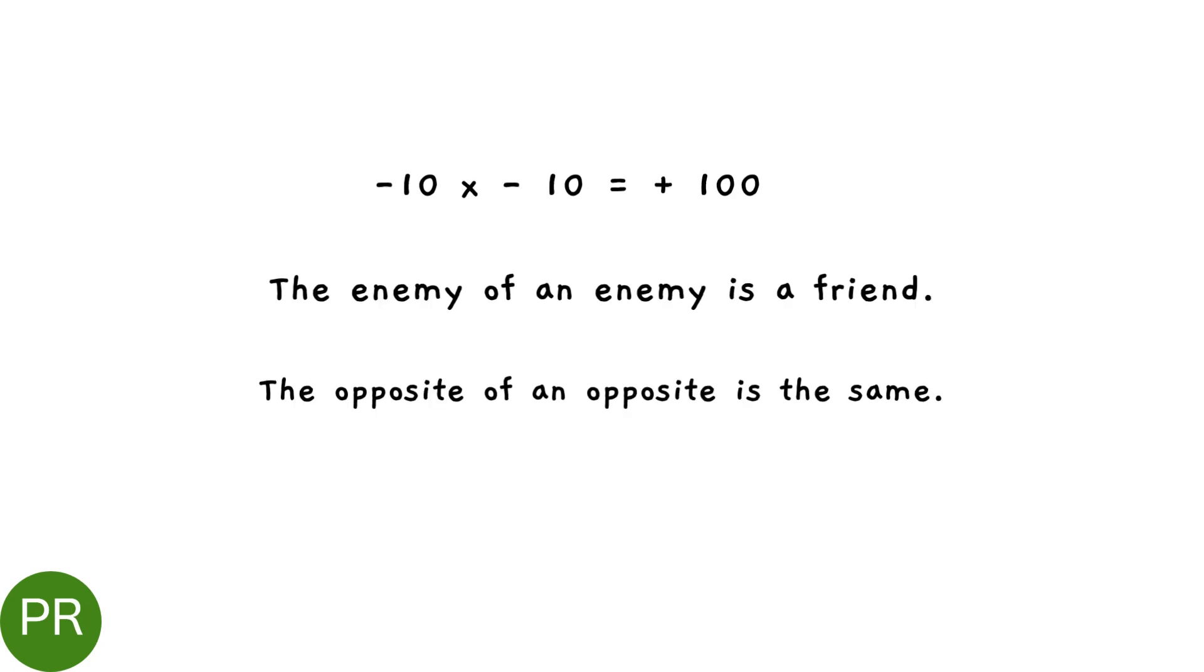When we multiply two negative numbers, we always get a positive number. You may ask why? Well, have you heard that the enemy of an enemy is a friend? Or the opposite of an opposite is the same?